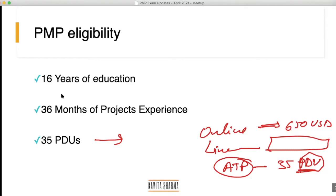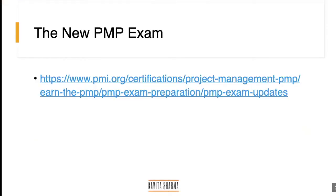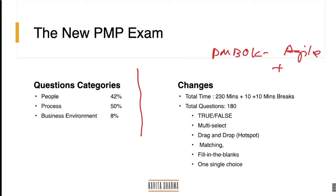Now for the new exam changes: the previous PMP exam was based on PMBOK 6. The new PMP exam covers PMBOK 6 plus Agile, plus people theories and other elements. There is new material called the Student Handbook, which PMI provides directly through its content division, available via the eLo choice platform.